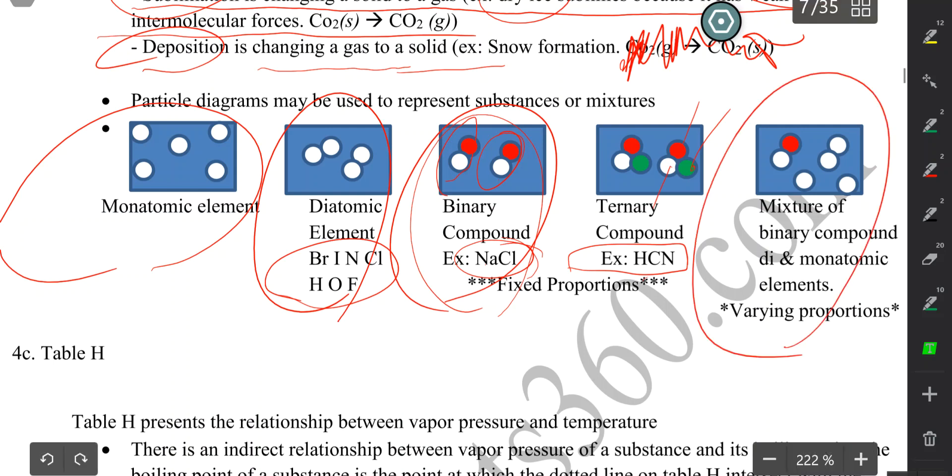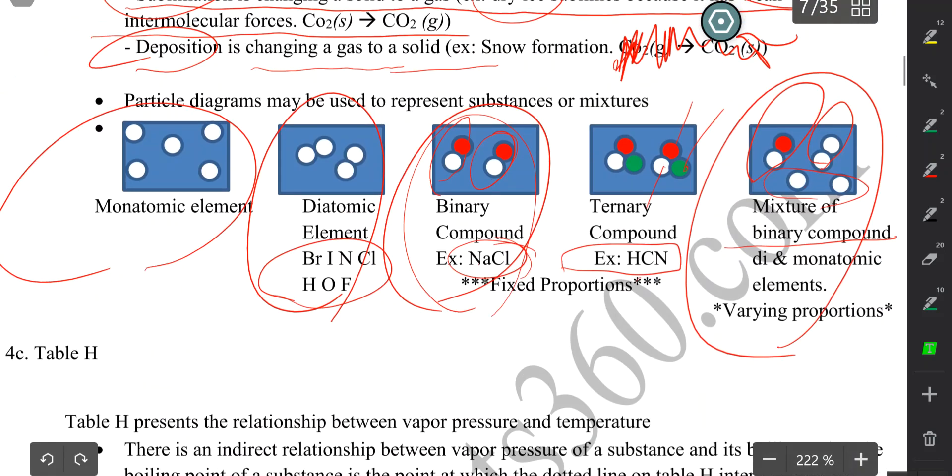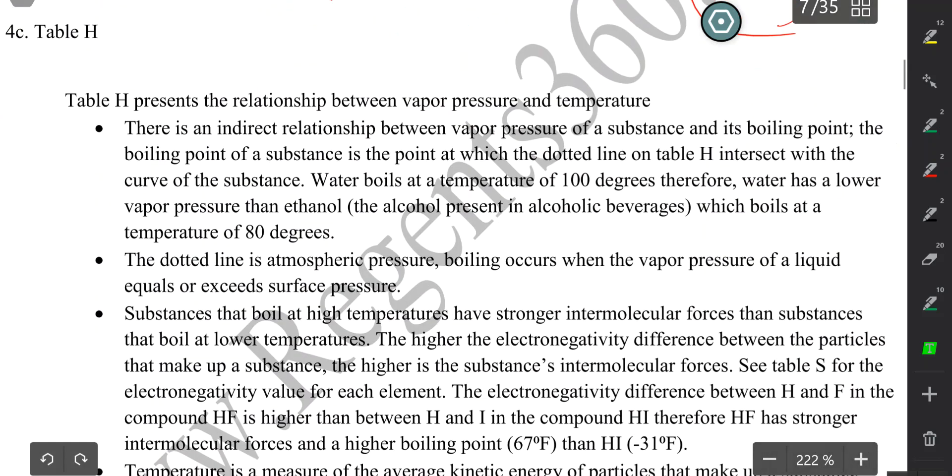If you have a mixture of, let's say, a binary compound—here's a binary compound, maybe NaCl—diatomic and monatomic elements—here's a diatomic element, here are monatomic elements—notice this has varying proportions. I may have more of the monatomic elements than I do of the diatomic elements or the binary compound. Okay, so this is how we draw particle diagrams. Make sure you practice that.